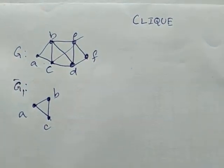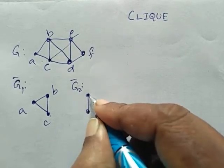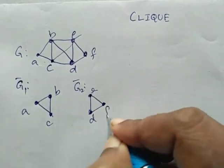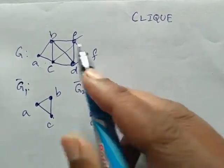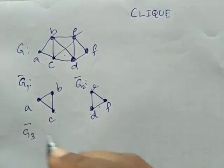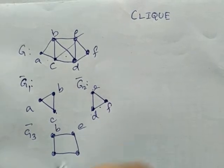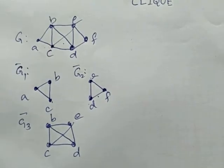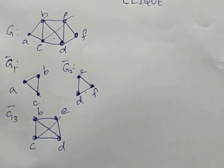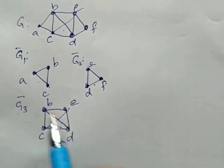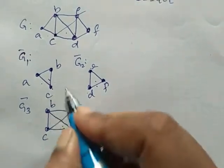There is also another complete subgraph G2: I will take it as E, D, F. E is connected to F and D, D is connected to E and F, F is connected to E and D. So this is another complete subgraph of G. One more subgraph G3 equals B, E, C, D — this is another complete subgraph of G. No other complete subgraph exists for G. So a clique in a graph is a complete subgraph.